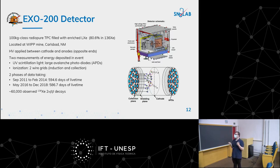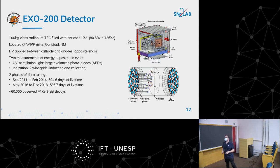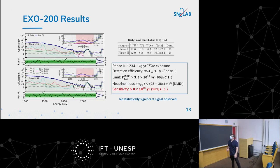EXO-200 took data in two phases because there was an accident in the mine that stopped operations between 2014 and 2016, but we took roughly the same amount of data in each phase. In the end we observed about 60,000 two-neutrino double beta decay events. These are the final results - showing a selection of events that look like double beta decays in phase one and phase two.